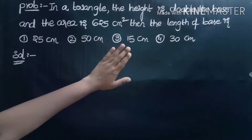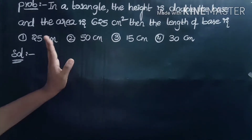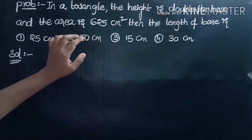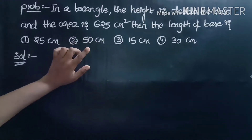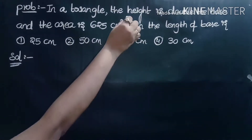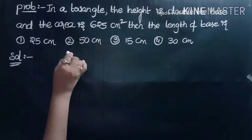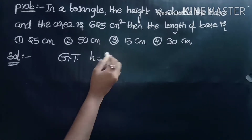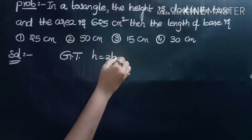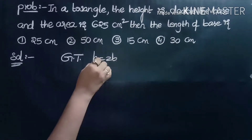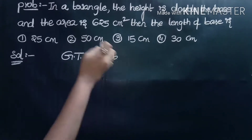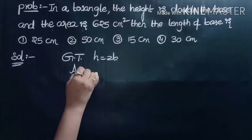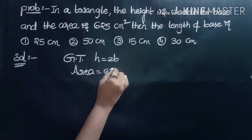Third problem. In a triangle, the height is double the base and the area is equal to 625 cm². Find the length of the base. Given that height H = 2B, where B is the base of the triangle, and area equals 625.